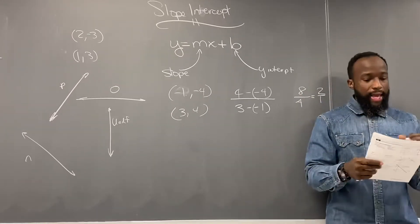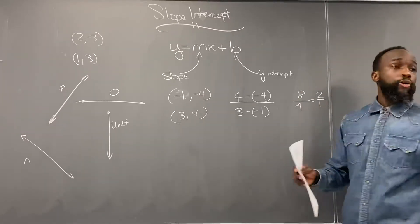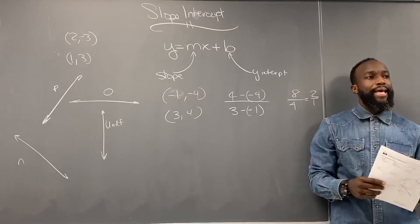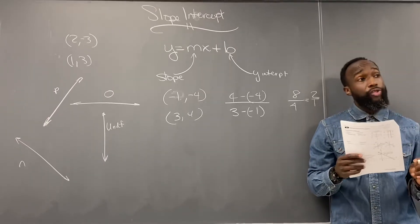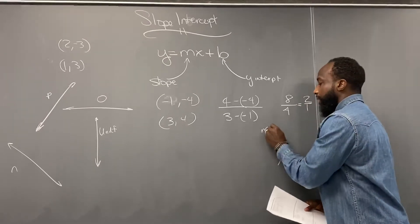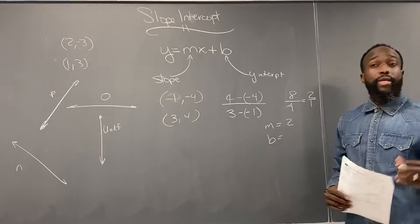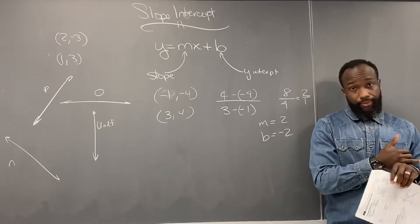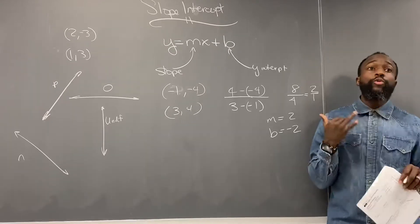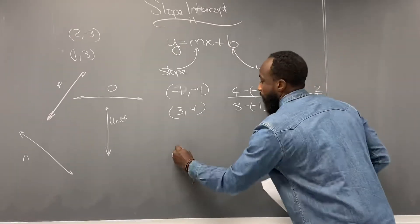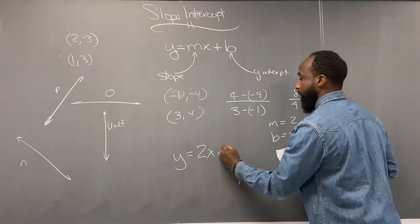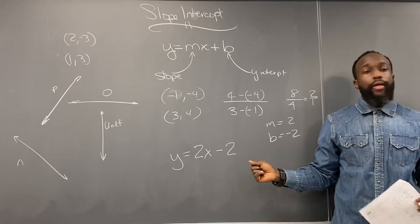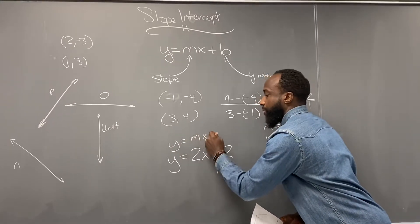Look at that picture on page two — where does that line cross the Y axis? At negative two. So in this case, M equals two and the y-intercept B is negative two. We looked at the graph and found the slope and the y-intercept. This is what it would look like in slope intercept form: y equals two x minus two. This is y equals mx plus b, where M is two and B is negative two.